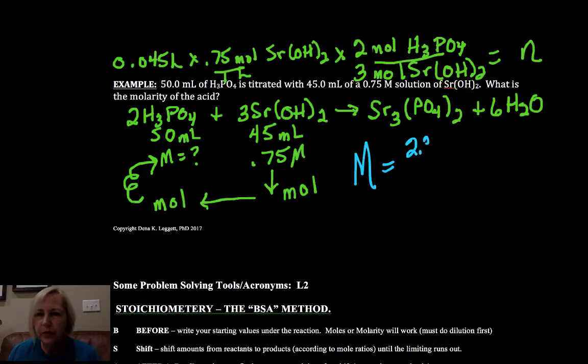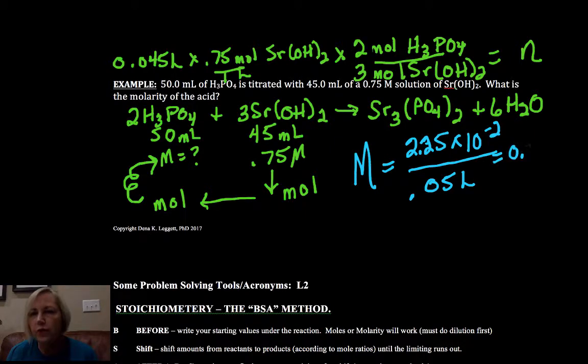That's going to give us moles, and what we're going to do is once we have those moles, we're going to plug those into the molarity formula. Those moles were 2.25 times 10 to the minus two over my volume of acid, which was 50 milliliters or 0.050 liters, and I got 0.45 molar.